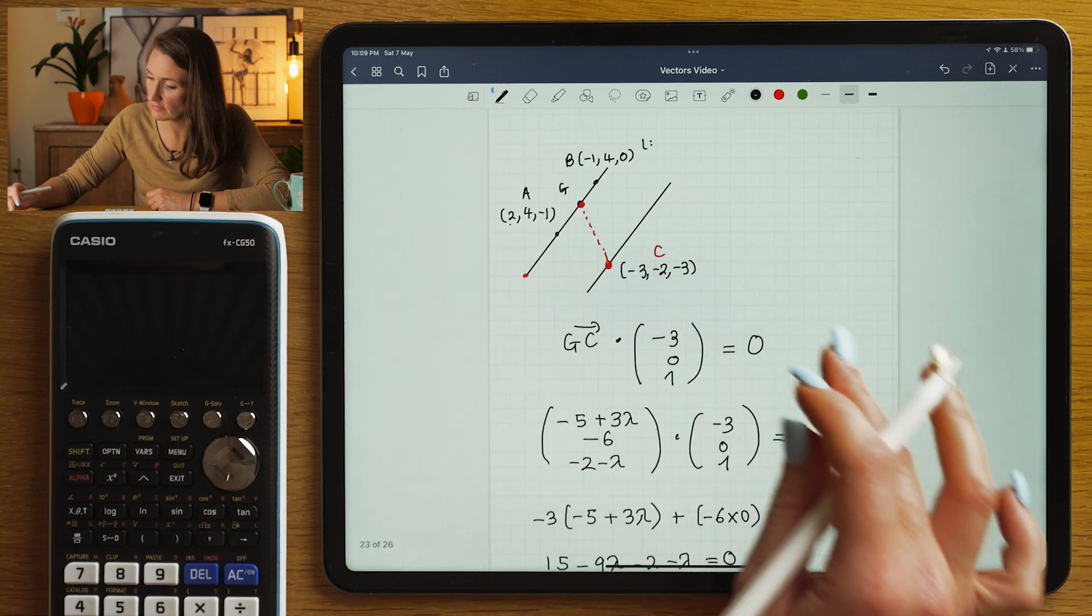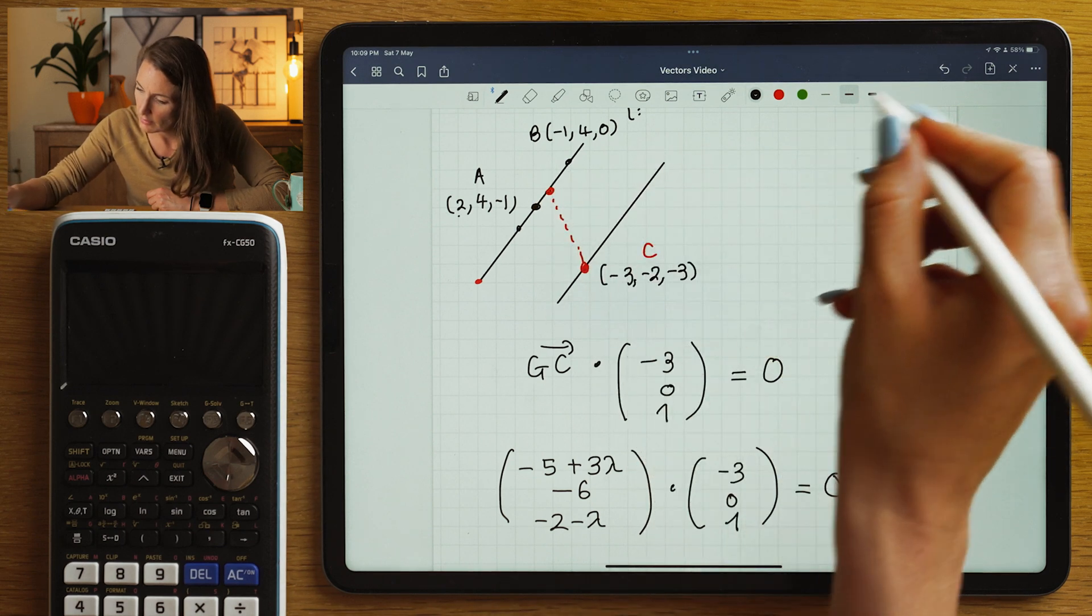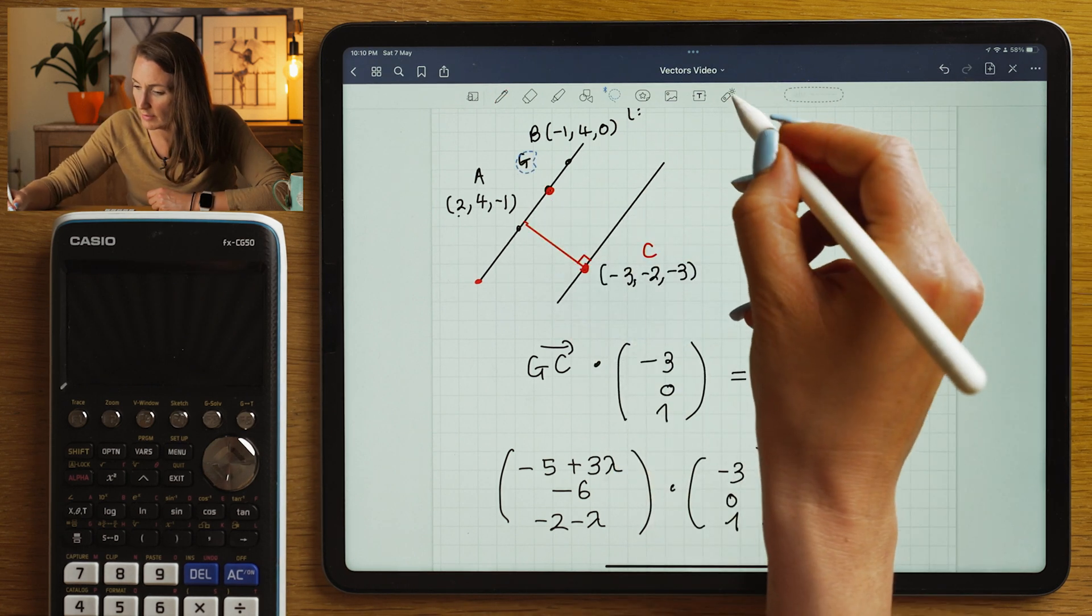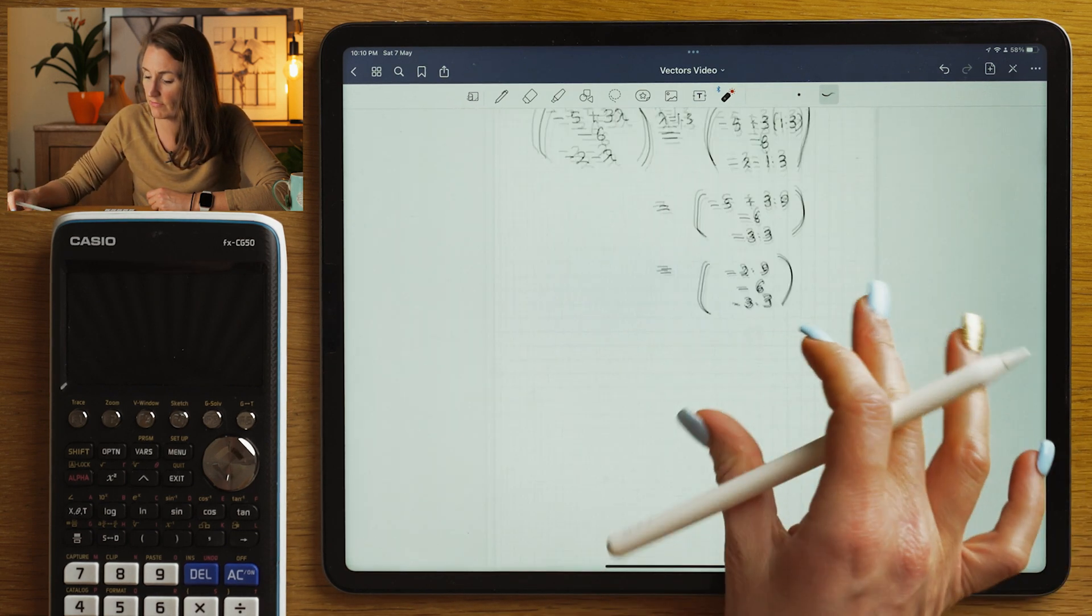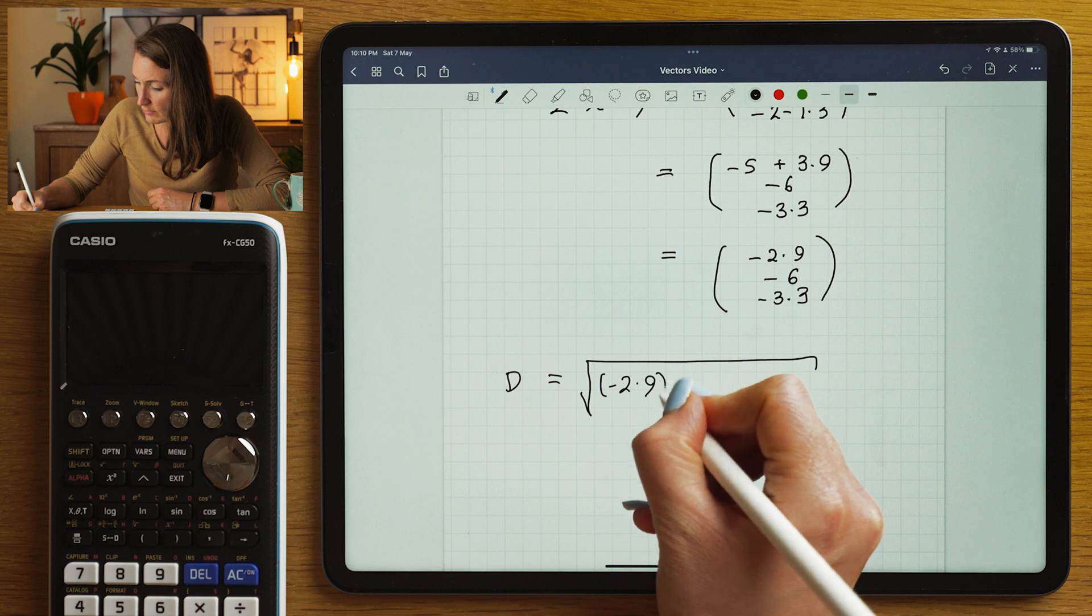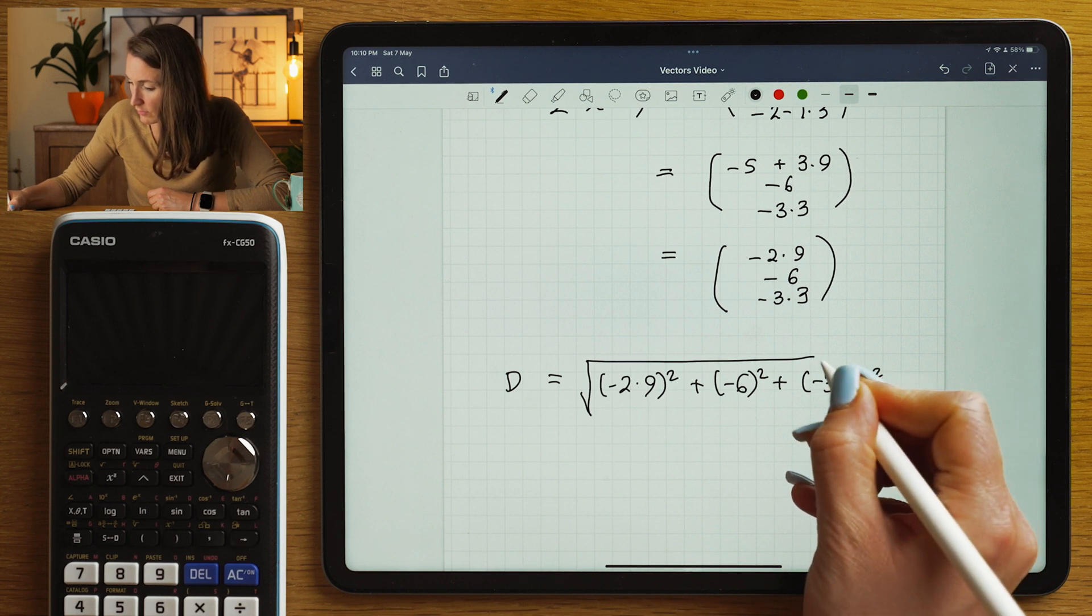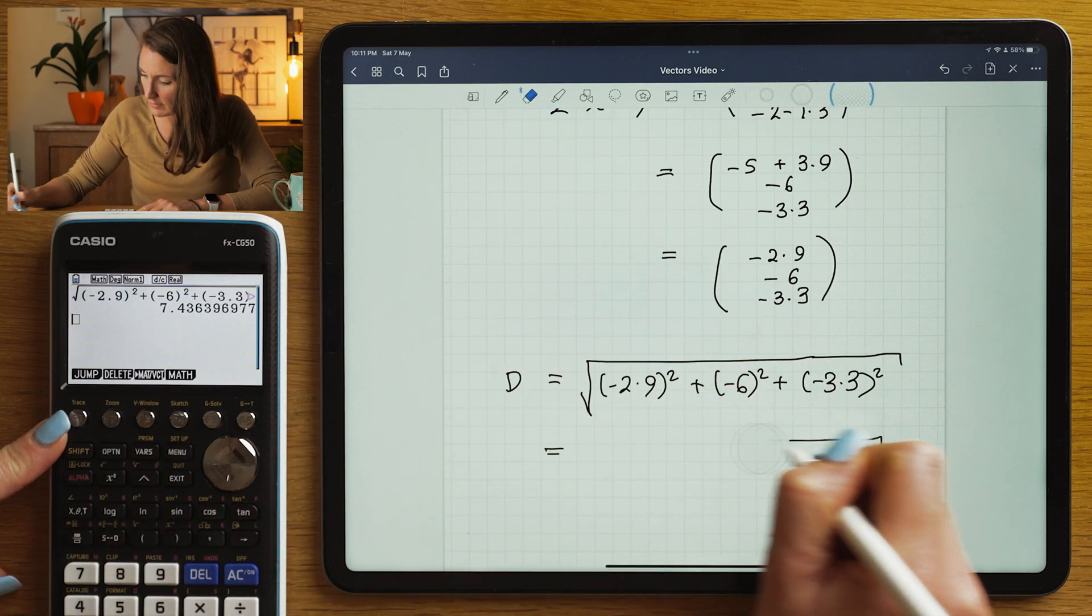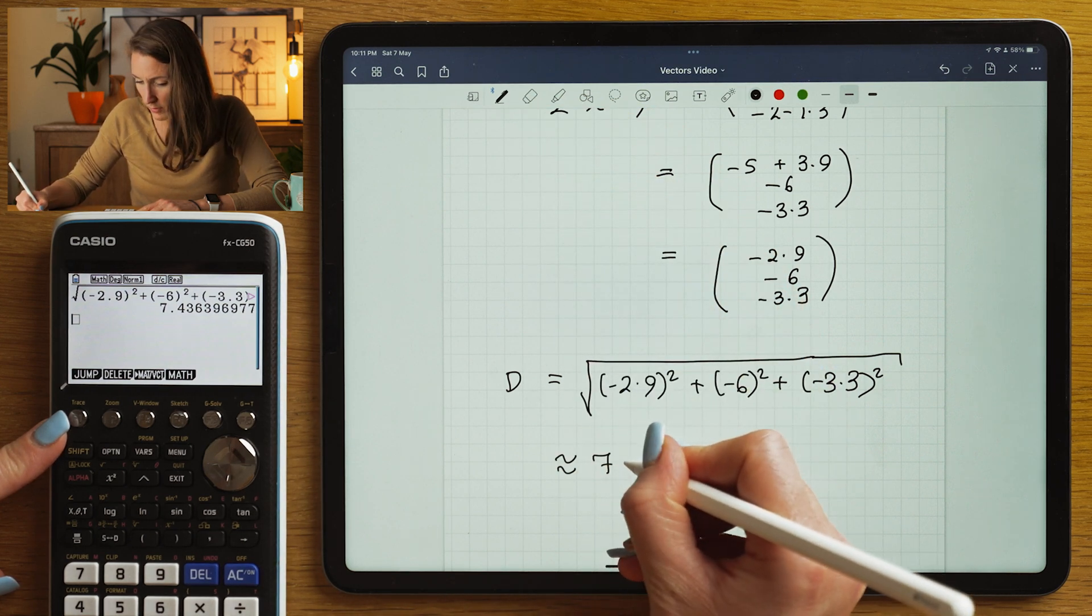So that's the vector that will take us across here. I'm going to redraw it now because we've picked up the specific point. We've picked the specific value of lambda such that it's perpendicular. Now all we have to do to measure the distance between the perpendicular lines is look at how long that vector is. So you're going to use your distance formula of the vector, and that's going to be (-2.9)² plus (-6)² plus (-3.3)². And that distance is approximately 7.44.